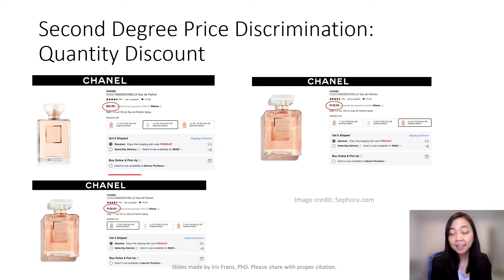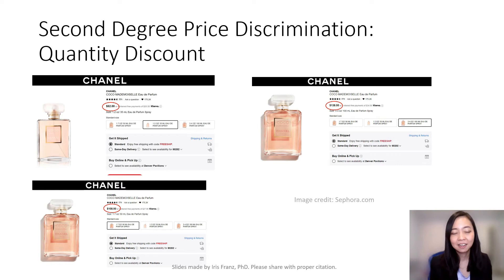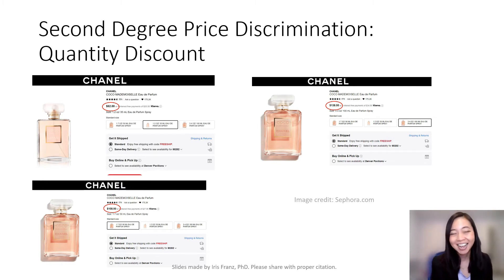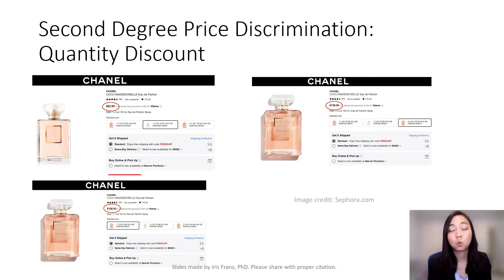Another example of second-degree price discrimination will be the quantity discount of fragrance. I got screenshots from Sephora, and you can see the same type of Chanel fragrance. The price goes up from $82 to $108 to $138.